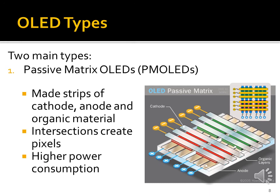Let's look now at the different types of organic light-emitting diodes. There are two main types used in industry. The first is a passive matrix OLED, also called a PMOLED. They're made up of strips of cathode, anode, and organic material, and the intersections of these materials make the pixels. The general downside to using this type of OLED is that they consume a lot more power than the other types.